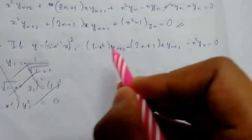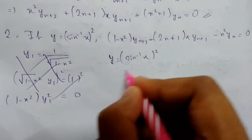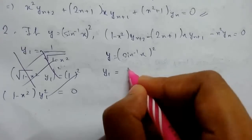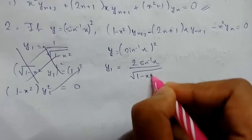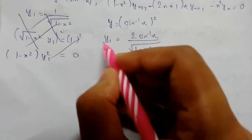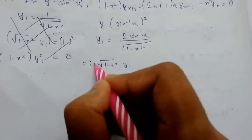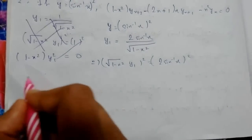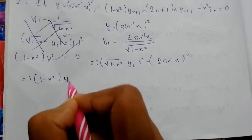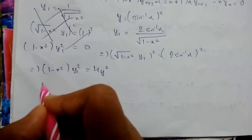Moving to the second problem: if y = (sin⁻¹x)², we have to prove a similar relation. Starting with y = (sin⁻¹x)², differentiating gives y₁ = 2·sin⁻¹x · (1/√(1−x²)). Taking this to the left hand side: (1−x²)·y₁² = 4y, which is our working equation.